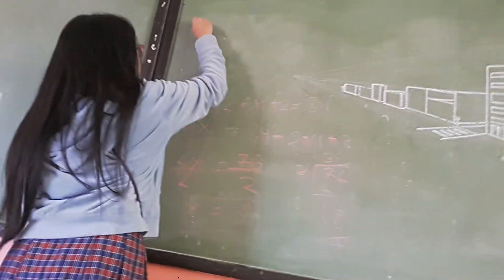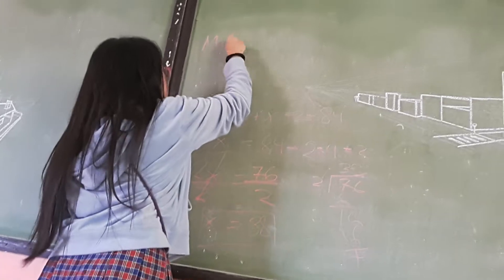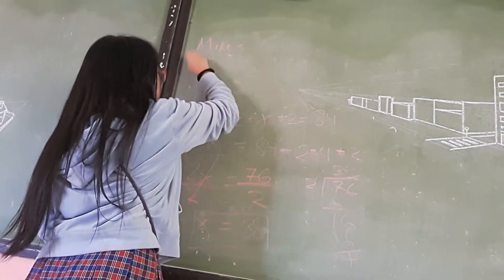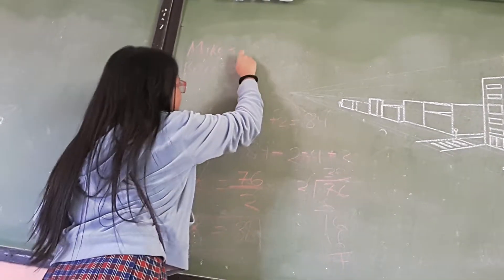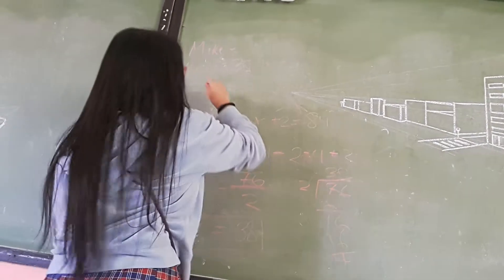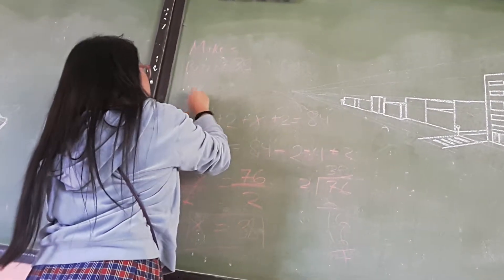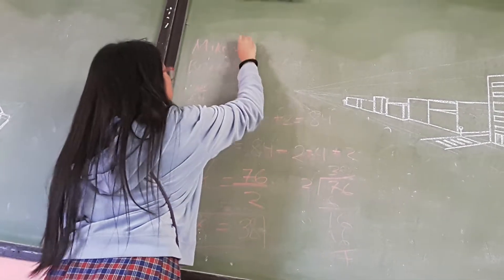So Mike, since he's older than Ron by 4 years, that means 38 plus 4, which equals 42.